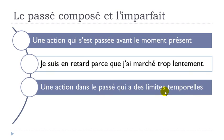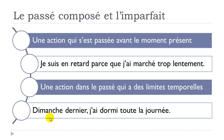Then, une action dans le passé qui a des limites temporelles — an action in the past with clear time limits. You know exactly when it started or when it ended. The example: 'Dimanche dernier, j'ai dormi toute la journée.' Dormir means to sleep. J'ai dormi is the passé composé form. Toute la journée means all day long — you've got a clear limit, you know exactly when it starts.